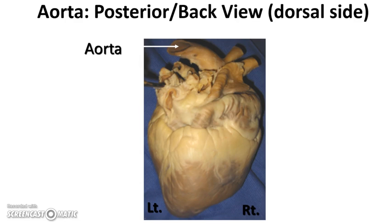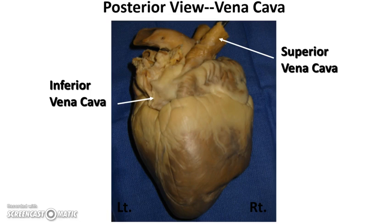The back of the heart — also called the dorsal side or posterior view — also shows the aorta as the large vessel at the top. Make sure you understand that the aorta is the largest artery in the body and transports oxygenated blood to the rest of the body. Here is a posterior view of the vena cava. There's a top and a bottom one: superior is above, inferior is below. The superior and inferior vena cava return low-oxygenated blood from the body into the top right atrium.